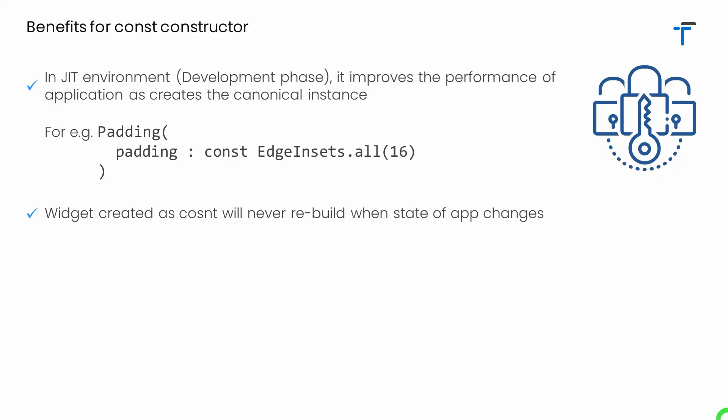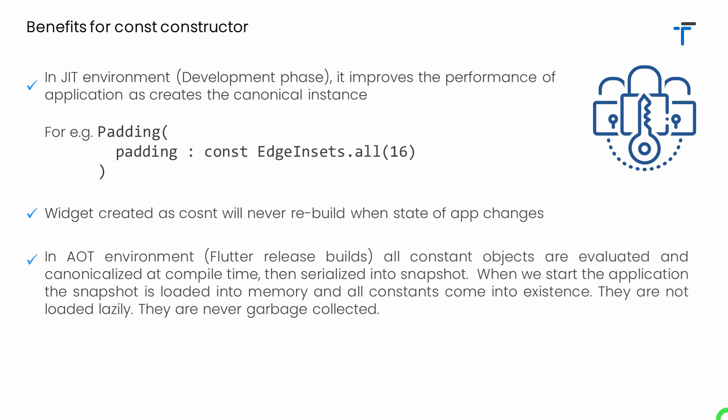A widget created as const will never rebuild when the state of the application changes — we already saw this in the example. From the GitHub documentation: in AOT — Ahead Of Time — environment, which is the release mode, all constant objects are evaluated and canonicalized at compile time, then serialized into a snapshot. When the application starts, this snapshot is loaded into memory and all constant objects come into existence from that snapshot. They are not loaded lazily — instead they are loaded when the application starts. They are never garbage collected, meaning as long as you don't close the application, all constant objects remain in memory and are reused whenever you create objects with the same values.